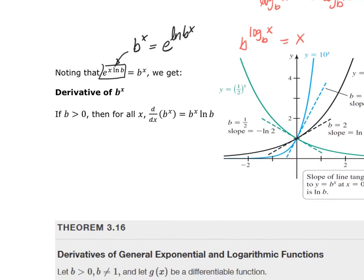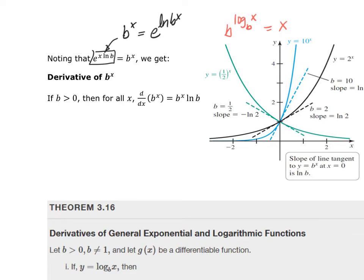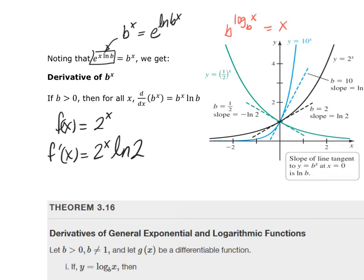The reason I do that is I can now take the derivative. The derivative of any base — base 2, base 7, bases have to be positive and not 1 — is B to the X times the natural log of B. So if F of X equals 2 to the X, my base is not E, but my derivative using that rule is 2 to the X times the natural log of 2.